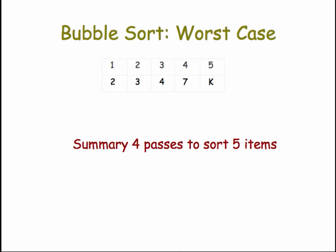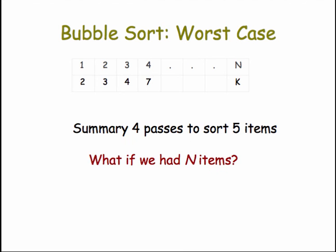So in this worst case example for bubble sort, where the cards are in exactly the wrong order, it took us four passes to sort five items. What if we had n items? Well, I think you can see that would take n minus one passes.